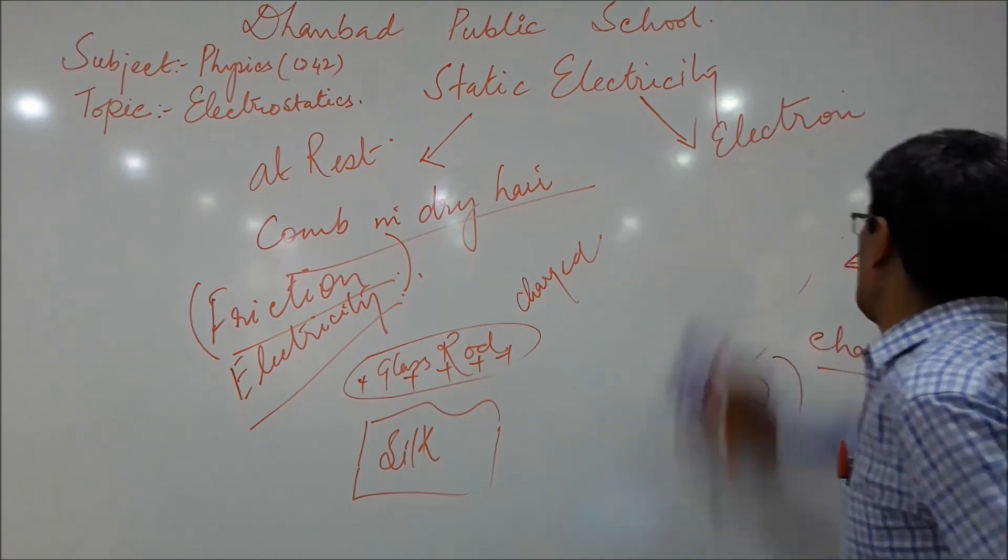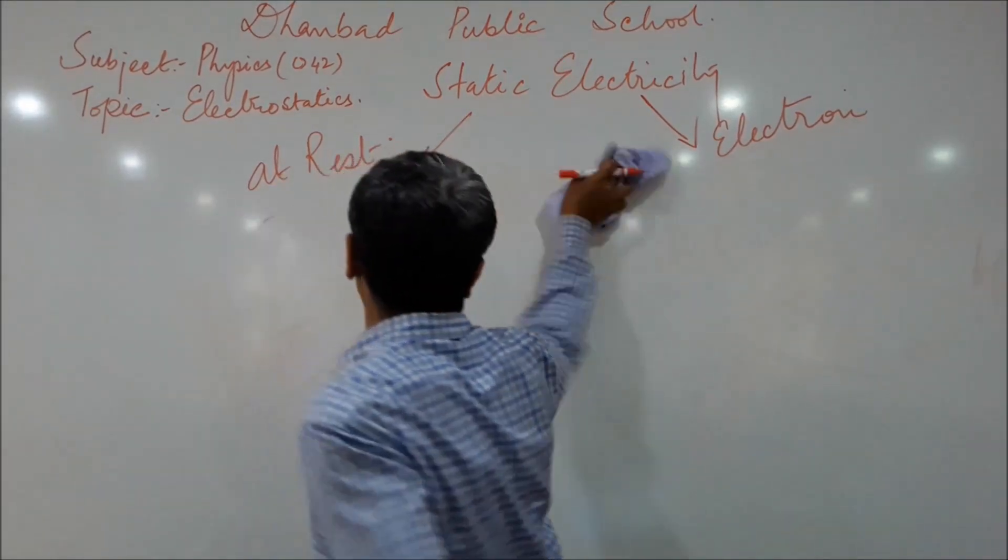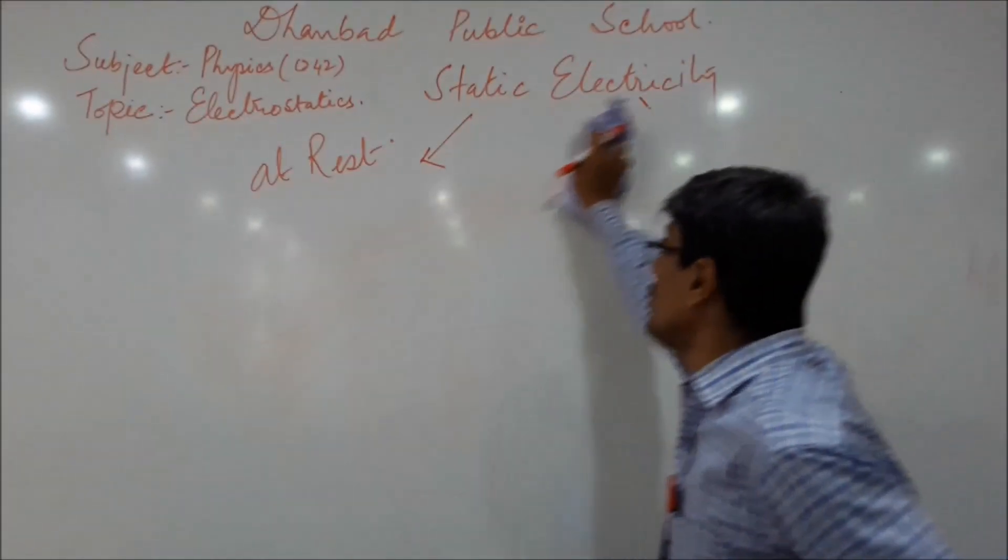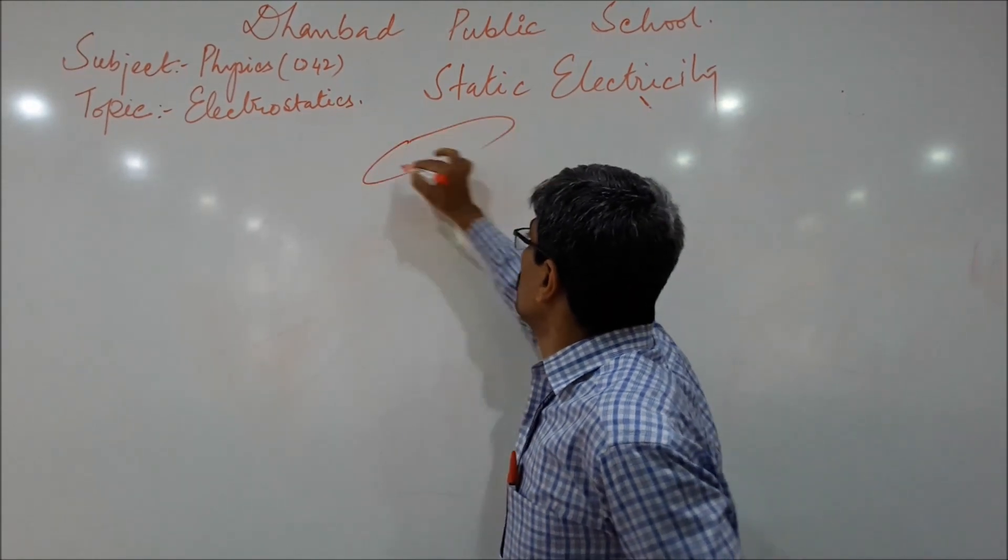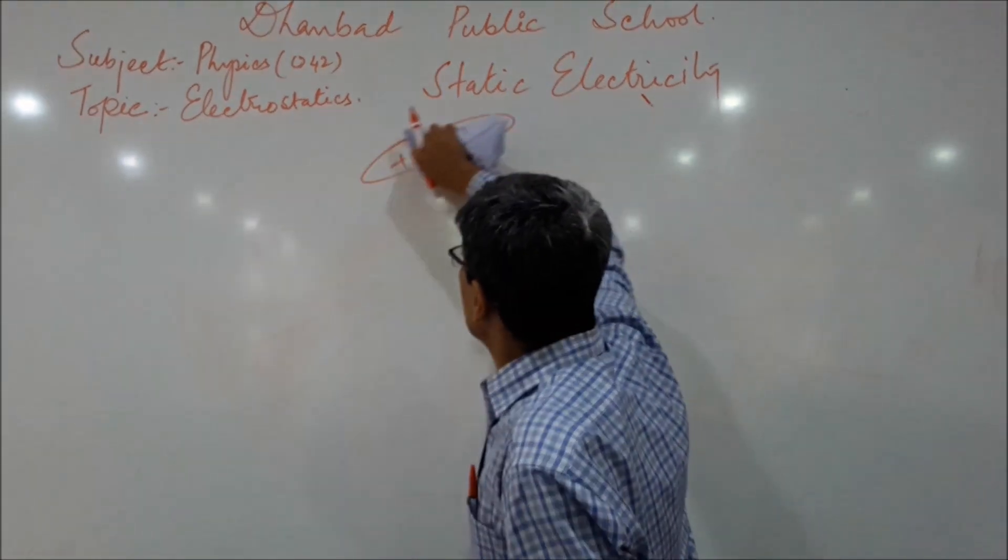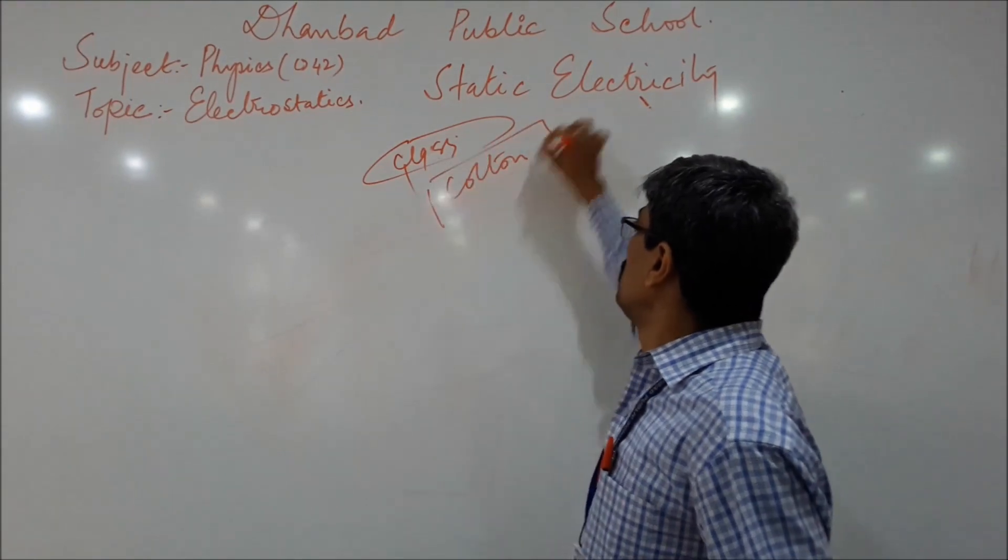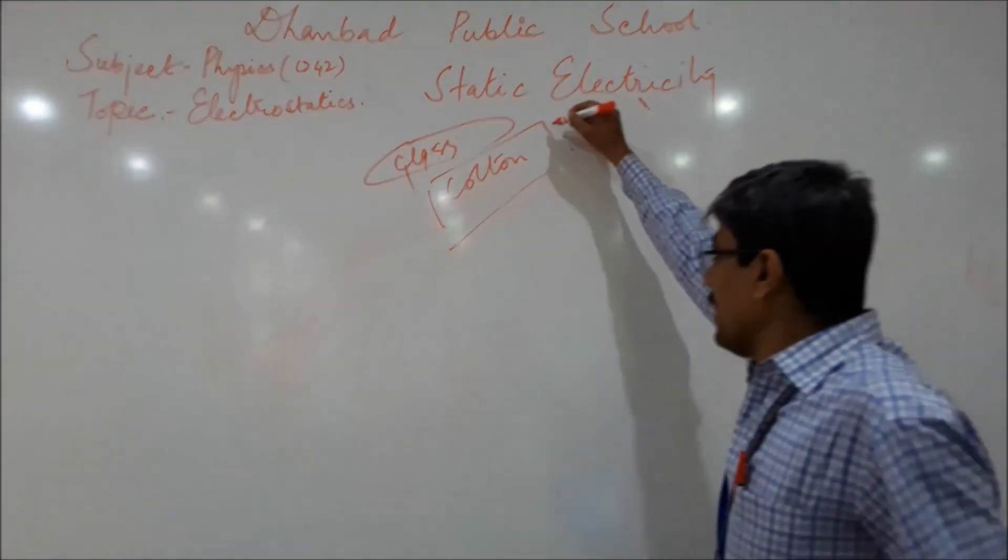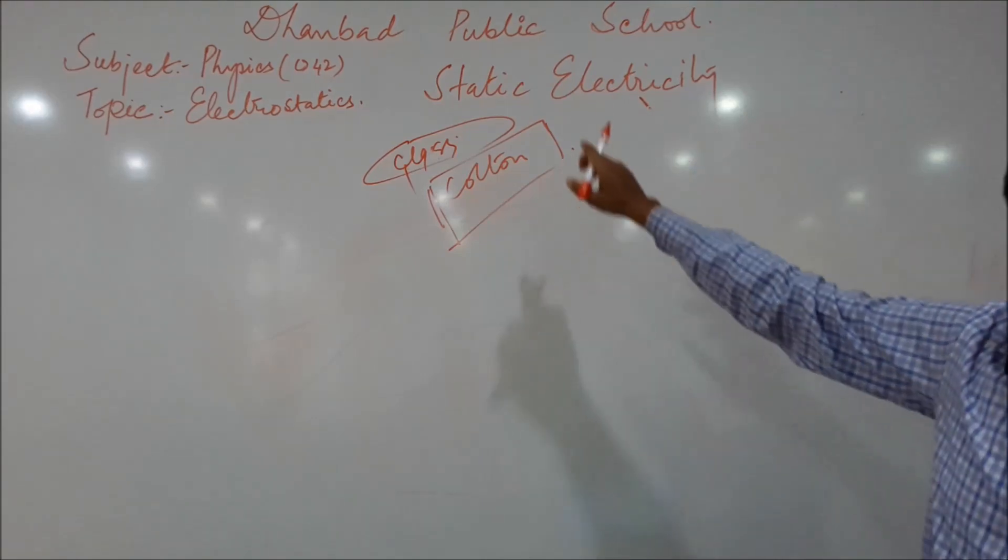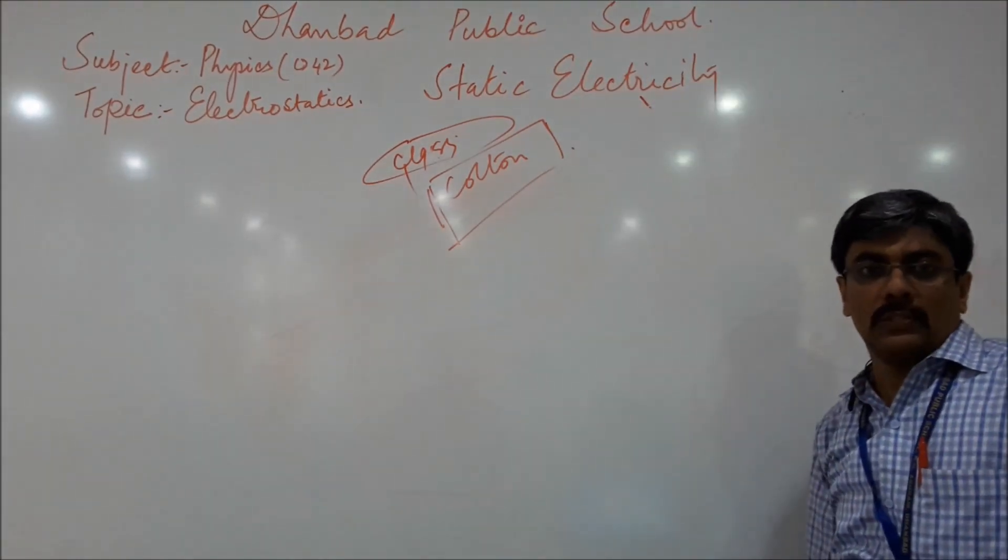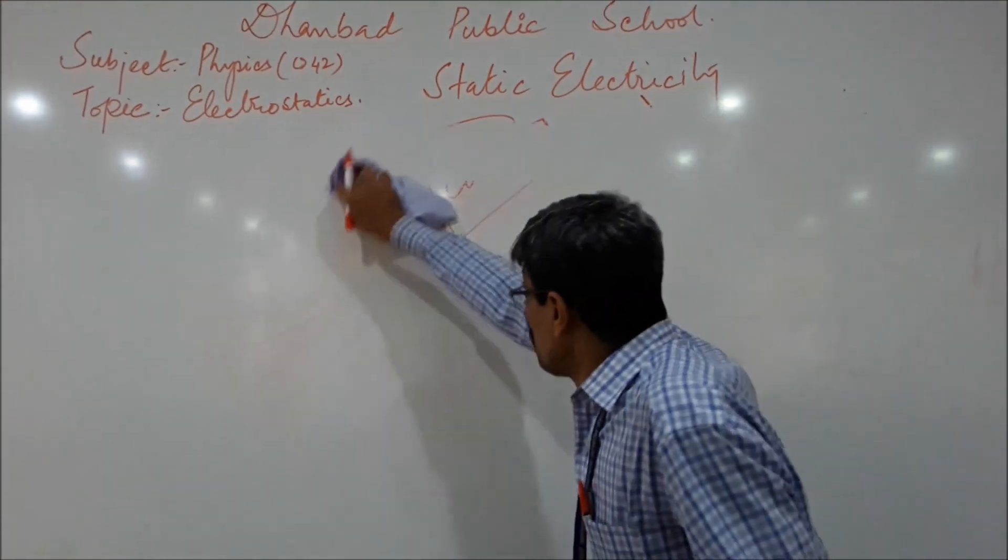We are now at a stage where we know that a body can be charged by rubbing it with some other materials. What if someone asks me, if glass rod is rubbed with cotton cloth? No. When glass rod is rubbed with cotton, it doesn't get charged. The simple reason is the coefficient of friction between cotton and glass is so very less, that the work done and the heat developed is not enough to remove electrons neither from the glass nor from the cotton. The heat simply gets dissipated or transferred from one body to the other.